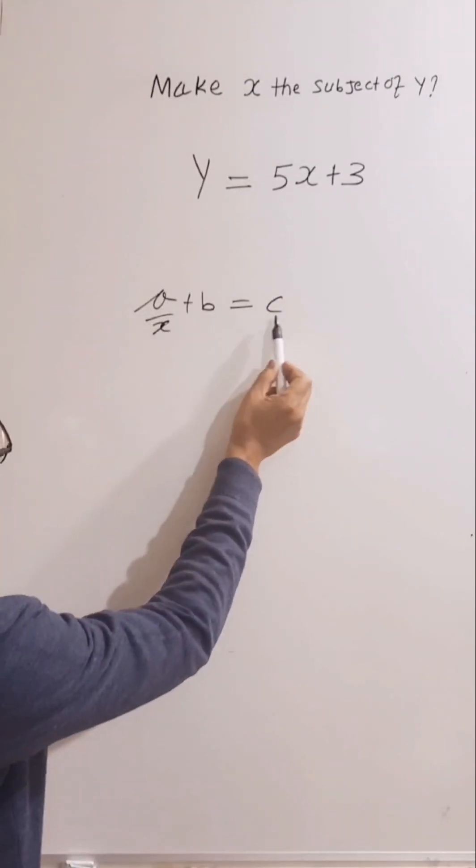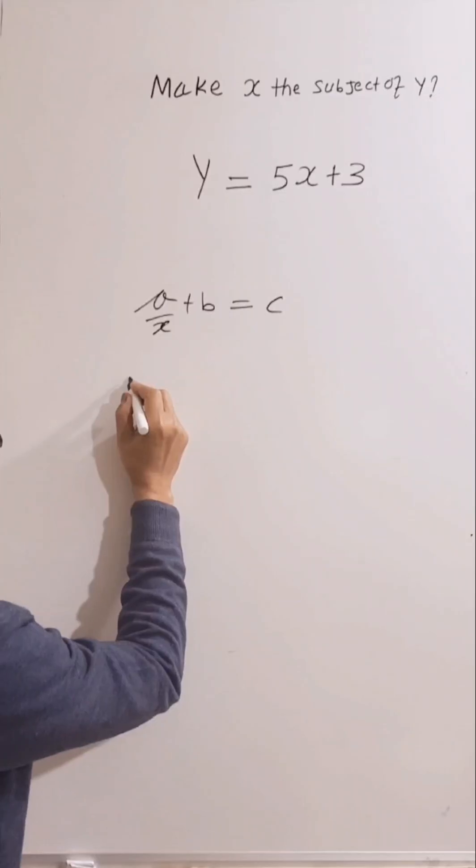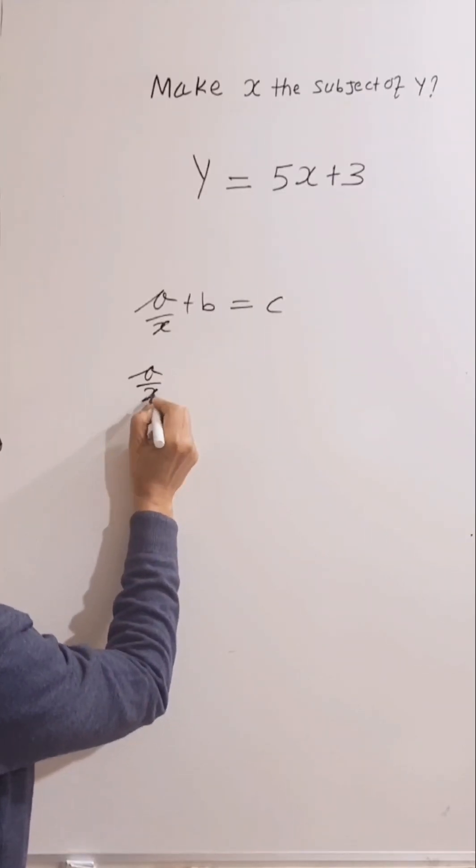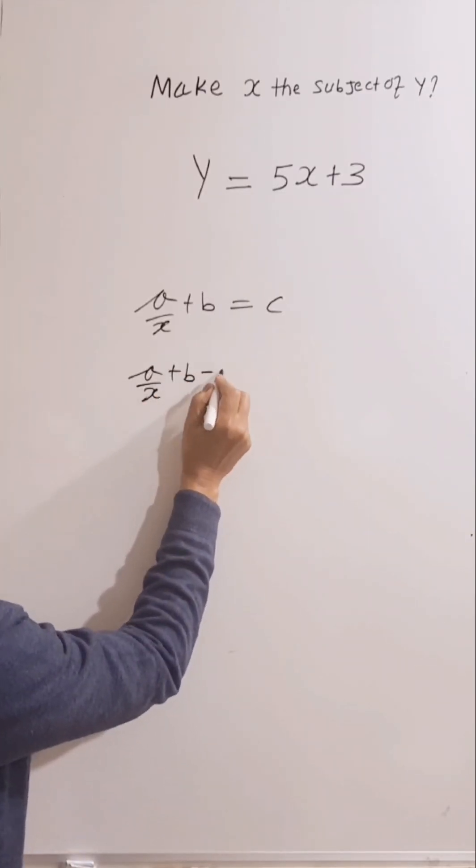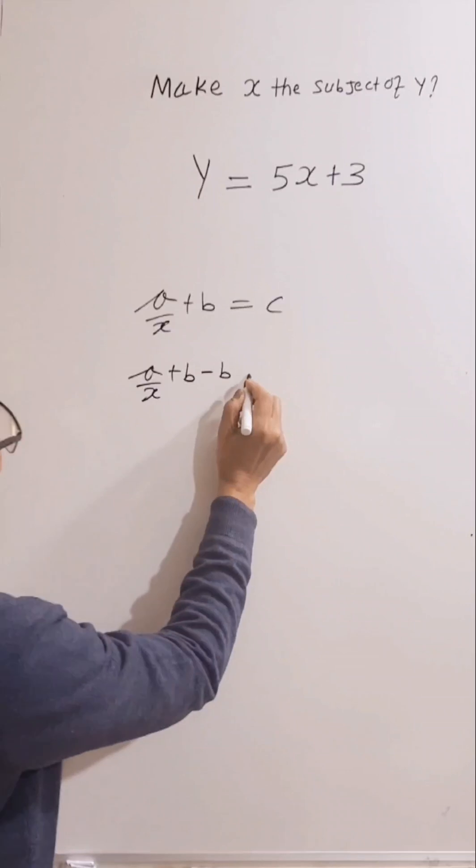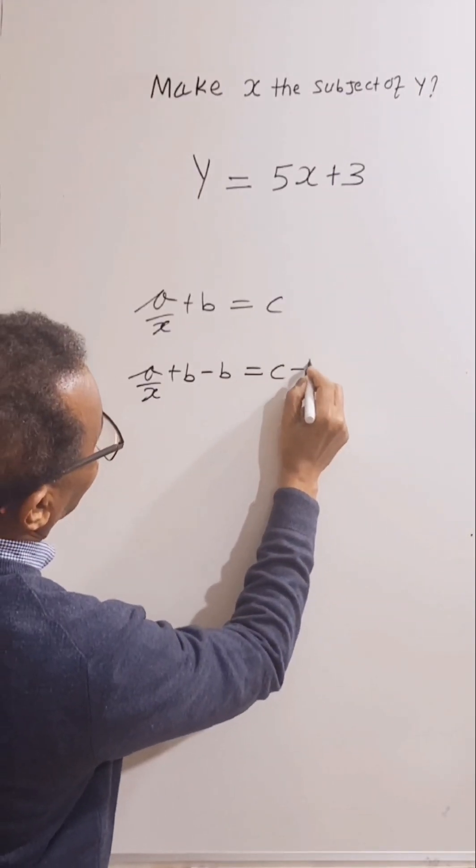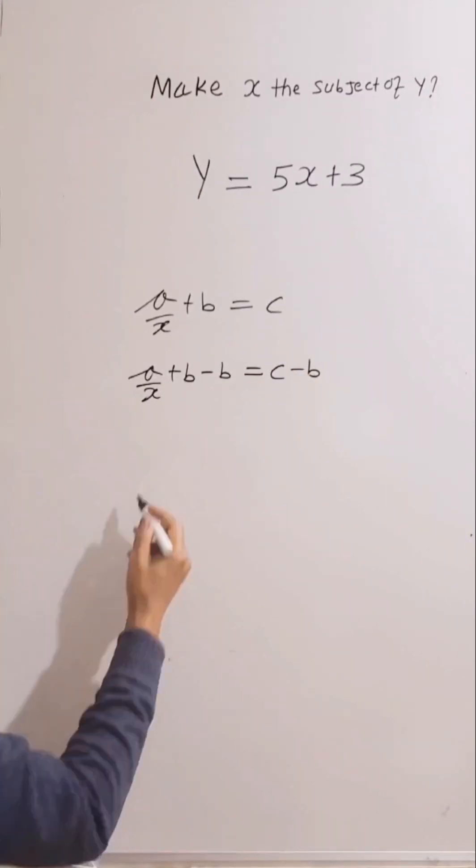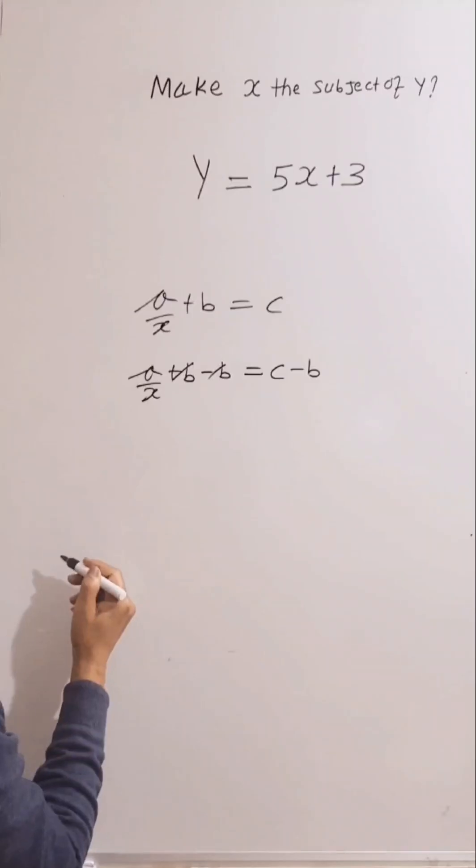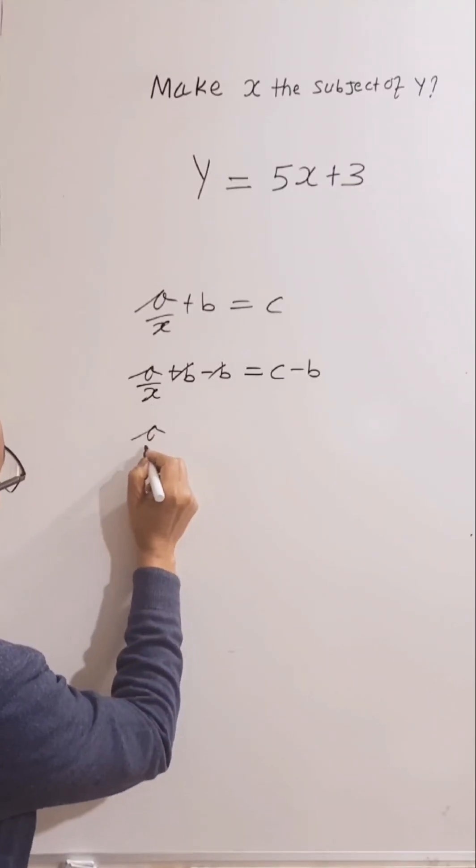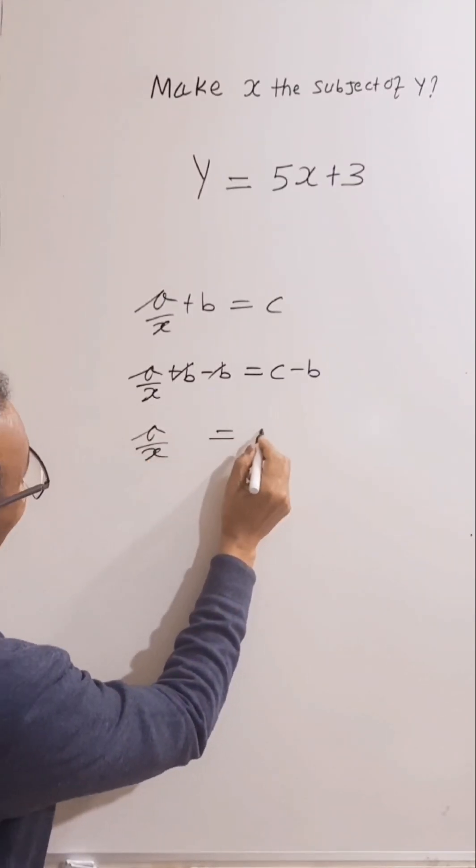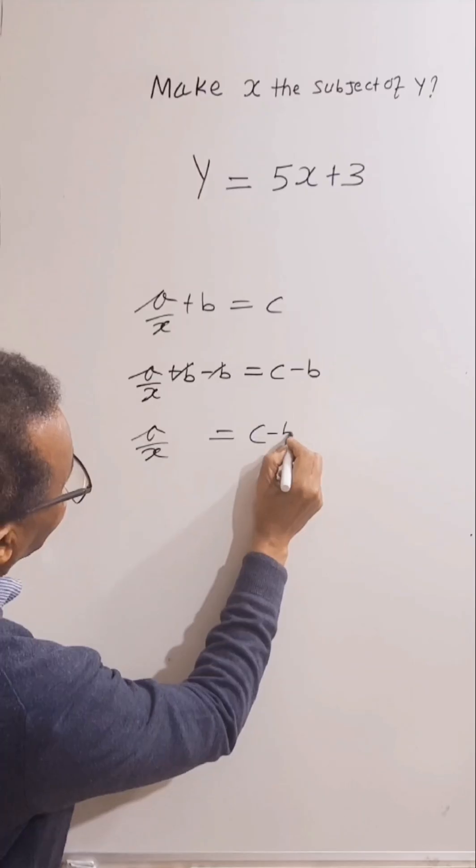Let's subtract B from both sides. So A over x plus B, take away B, equal C, take away B. So this is cancelled. So A over x equals C, take away B.